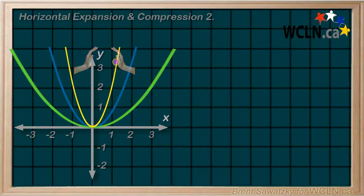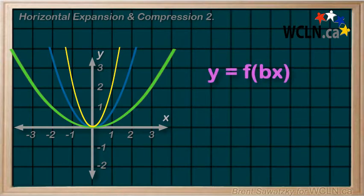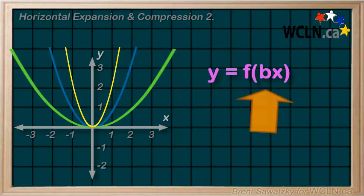In equation form, we'll recognize the horizontal expansion or compression by noting the multiplier beside the x, and we'll call that b. Whether it's a horizontal expansion or a horizontal compression simply depends on the value of b.